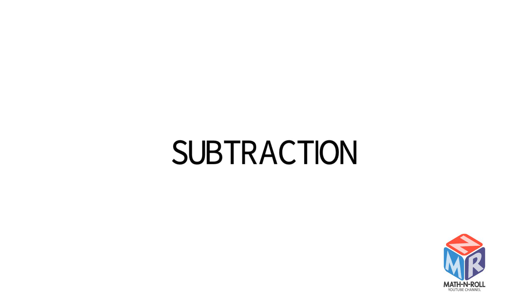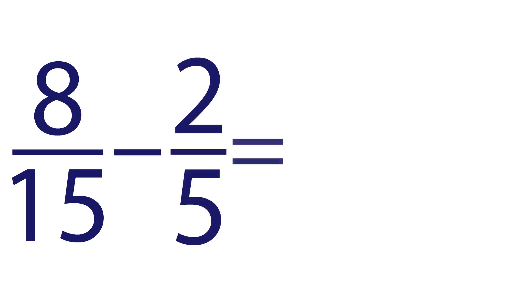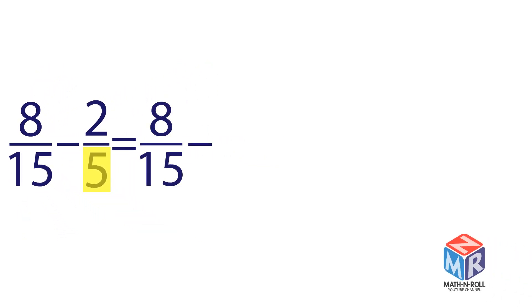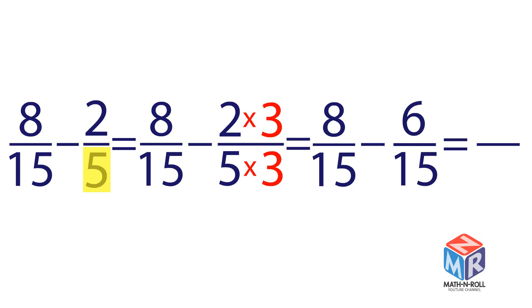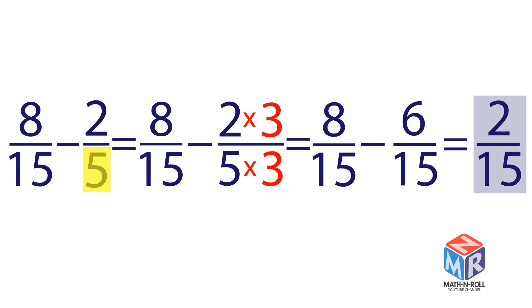Subtraction. We need to subtract 2 fractions with unlike denominators. We take the fraction with the smaller denominator and multiply both parts, the numerator and the denominator, by 3. Thus we found the equivalent fraction of 2 fifths. Next, subtract the fractions. Subtract the numerators and keep the denominator the same. So 8 fifteenths minus 2 fifths is equal to 2 fifteenths.